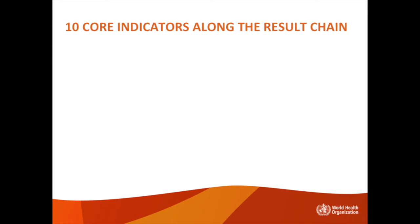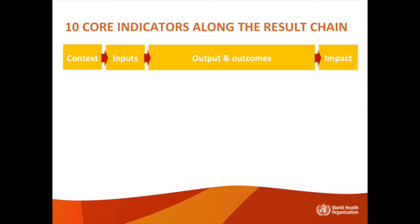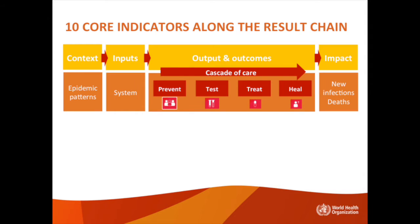The 10 core indicators are displayed around the result chain. This result chain starts from Context, then goes to Inputs, then to Outputs and Outcomes, and then to Impact. Context is about Epidemic Patterns. Inputs are about Systems. Outputs and Outcomes range through the Cascade of Prevention and Care. And then Impact is about New Infections and Deaths.